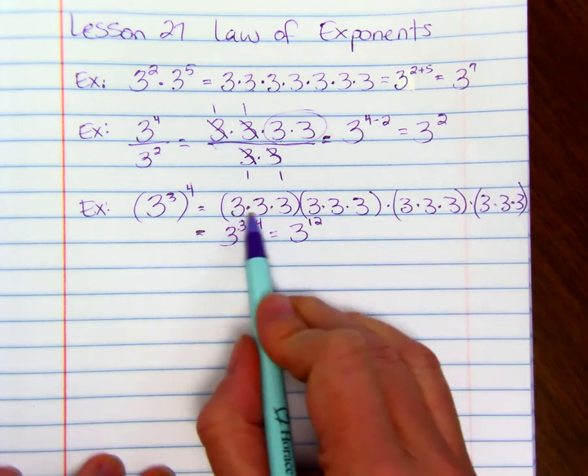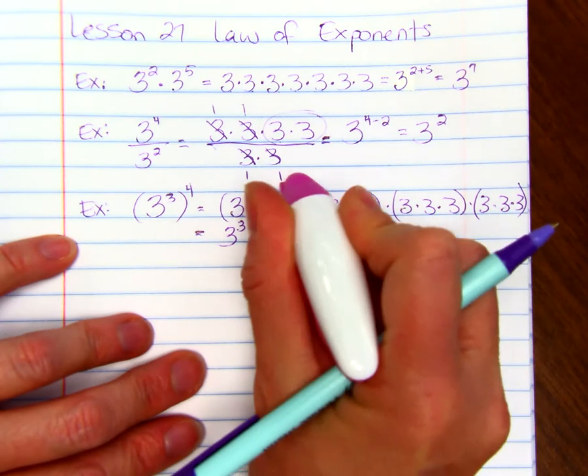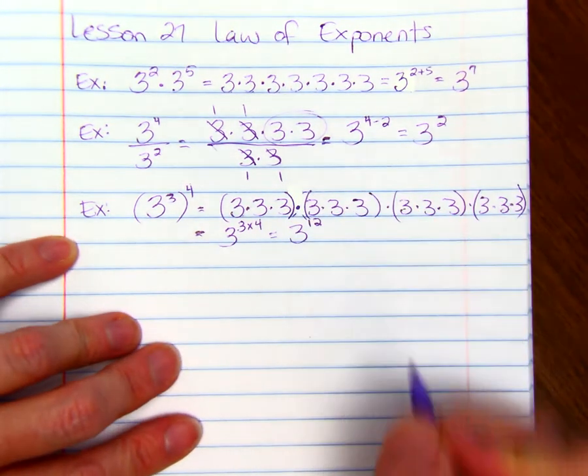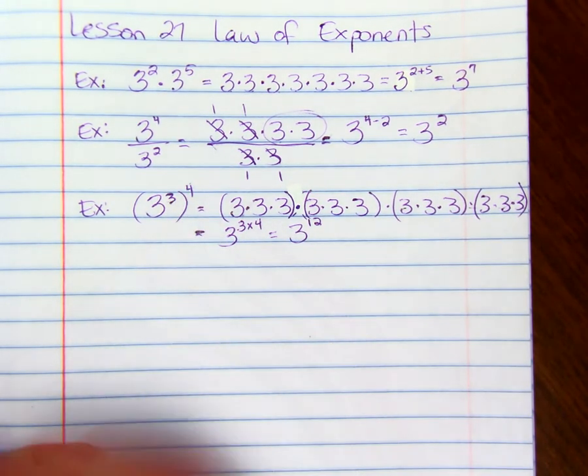So if you notice, this equals 3 raised to the 3 times 4th power, which is 3 to the 12th. So if you were looking, we'd have 12 threes here. Let's put a little dot right here instead of parentheses. I want to change that so it looks right. Put a little dot. There we go. So we have 12 threes being multiplied. We just had to multiply the powers.